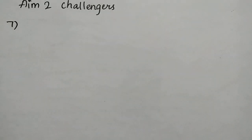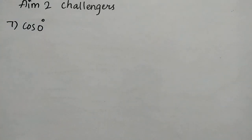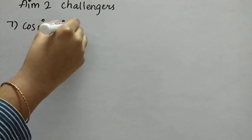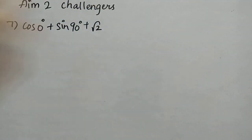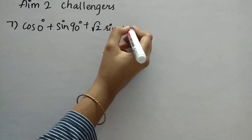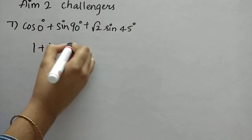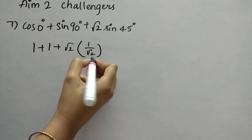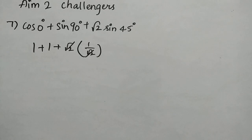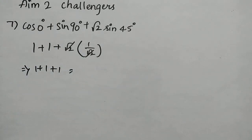The seventh question is: find the value of cos0° + sin90° + √2·sin45°. cos0° is 1, sin90° is 1, and √2 multiplied by sin45° which is 1/√2 — the √2 and 1/√2 cancel to give 1. So 1 plus 1 plus 1 equals 3.